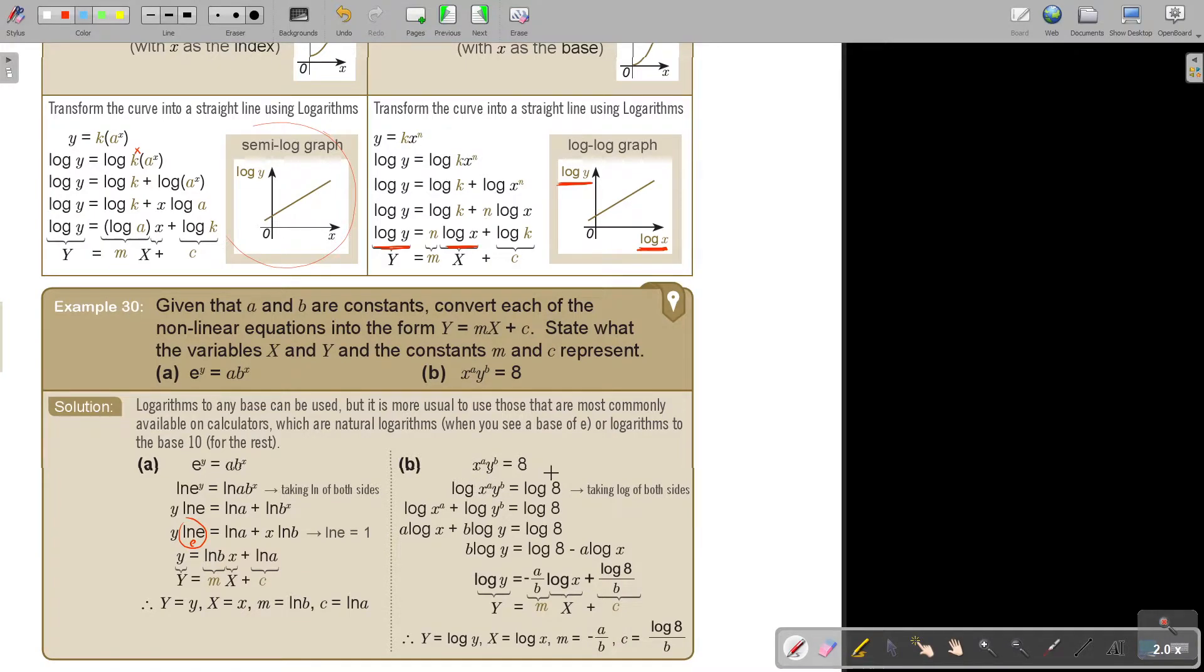And then, this is just an x. This is m. And this is c. So I showed you y equals y, x equals x. I just made it different, a capital, so that you don't get confused. And m is ln b, and c is ln a. Don't forget that this graph will look like this one. And then if you look at this one, again, now there's no e. So put logs on both sides.